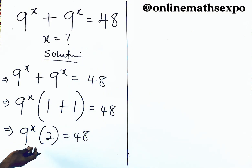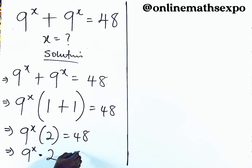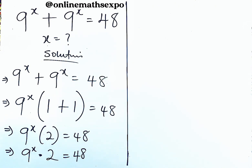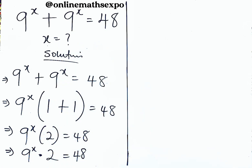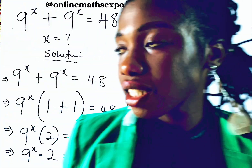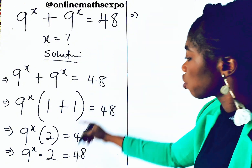You know that this is the same as 9 to the power of x multiplied by 2, equal to 48. Your target is x. So because of that, you are going to remove the 2, and because it's multiplying, you divide. To get x, we divide both sides by 2.